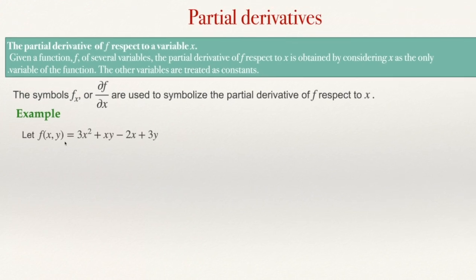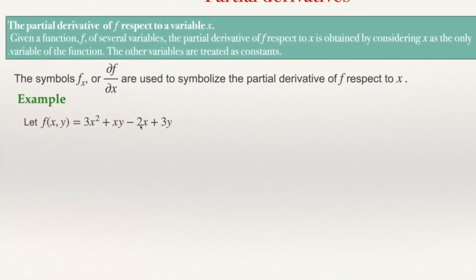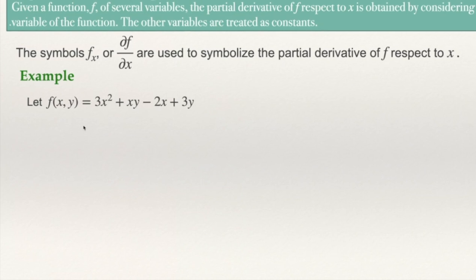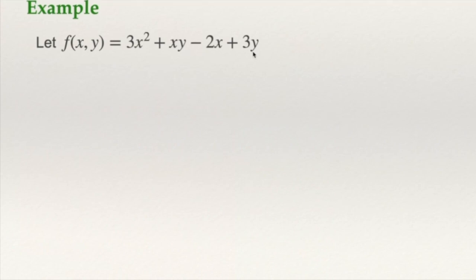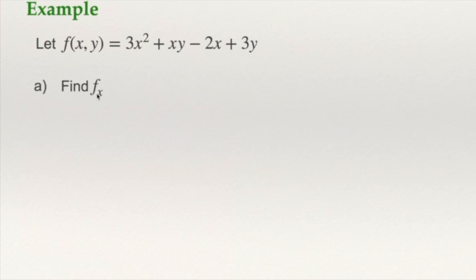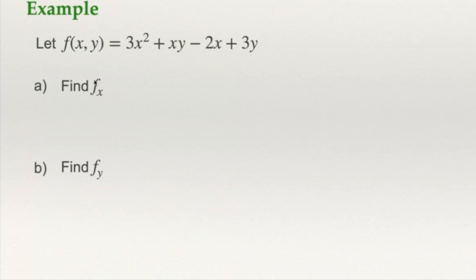It's similar to df/dx, the derivative with respect to x. But if I put it this way, it's because maybe there are other variables. Either of these two symbols can be used to symbolize the partial derivative with respect to x. With respect to y, we put the y; with respect to z, we put the z. For example, if we have 3x² + xy - 2x + 3y, this is a function of two variables, x and y. What is the partial derivative with respect to x? And what is the partial derivative with respect to y?